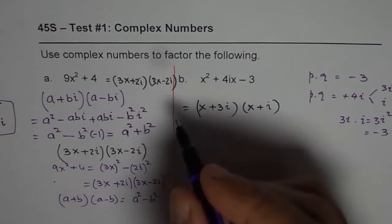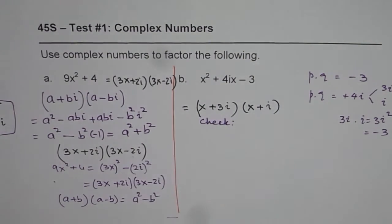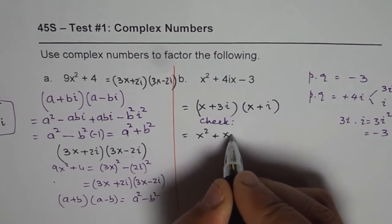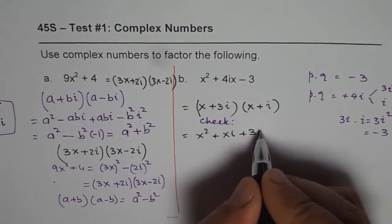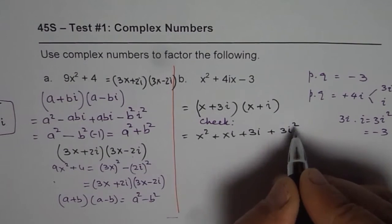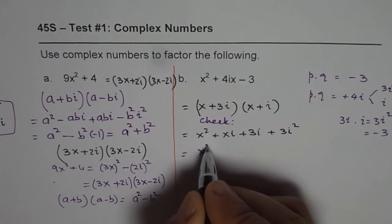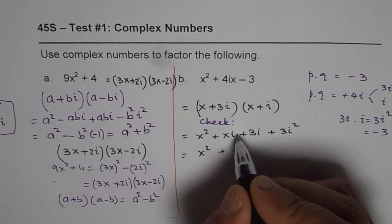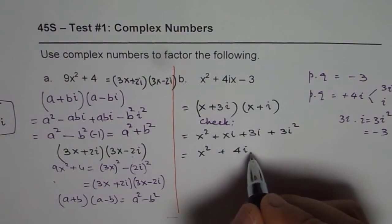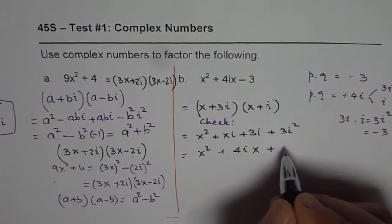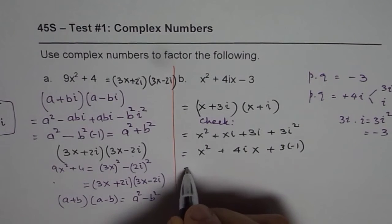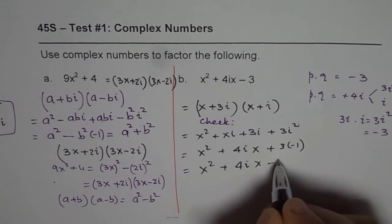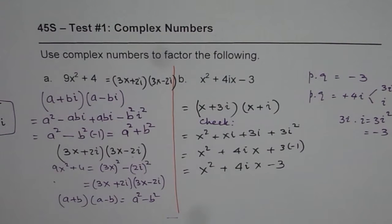Now it is a good time to check and verify. Let's check. So let us expand this. So if I expand what do I get? I get x² + xi. Multiplying by 3i I get +3ix + 3i². Now xi + 3i is 4i. So I forgot to write 4ix and this is 3 times -1, i². So this could be written as x² + 4ix - 3. So we get the same thing. So that is verified.